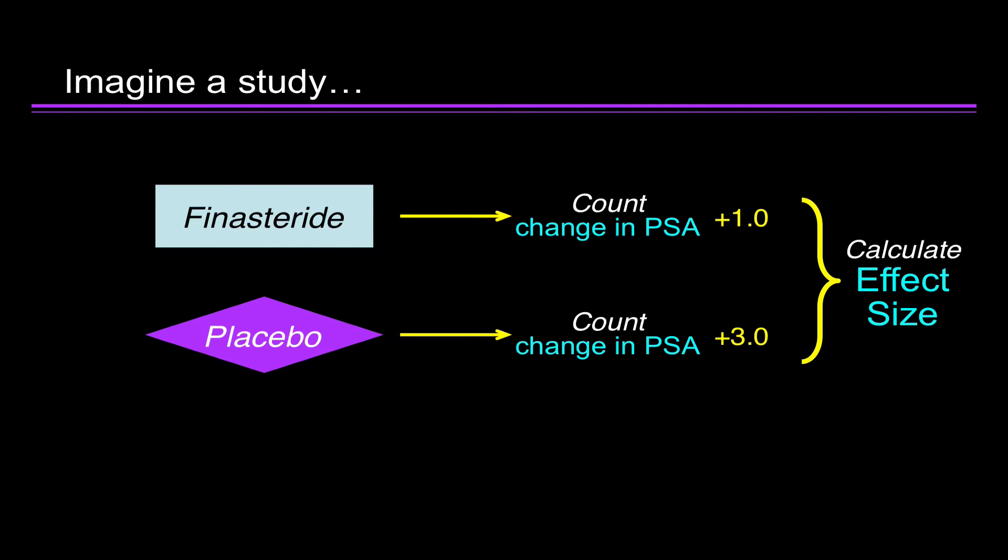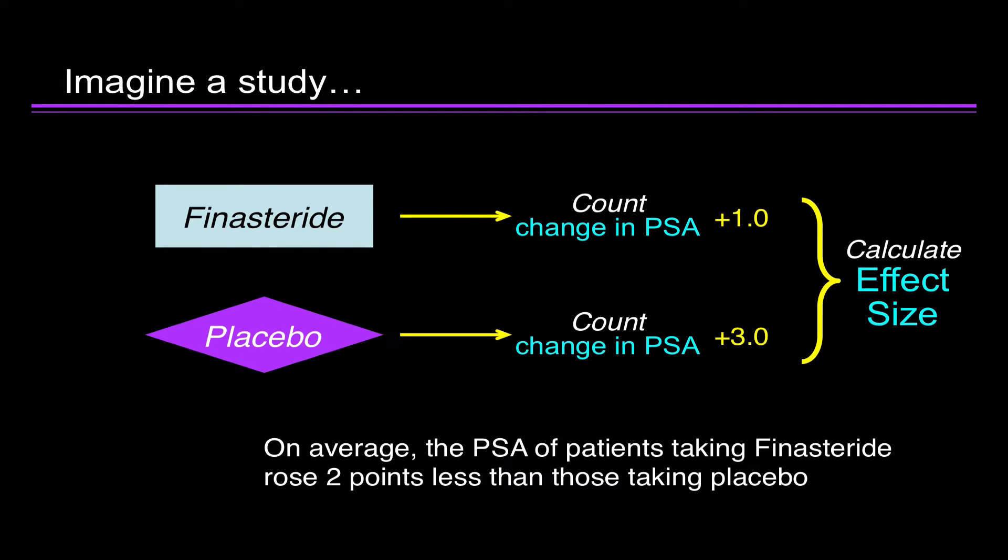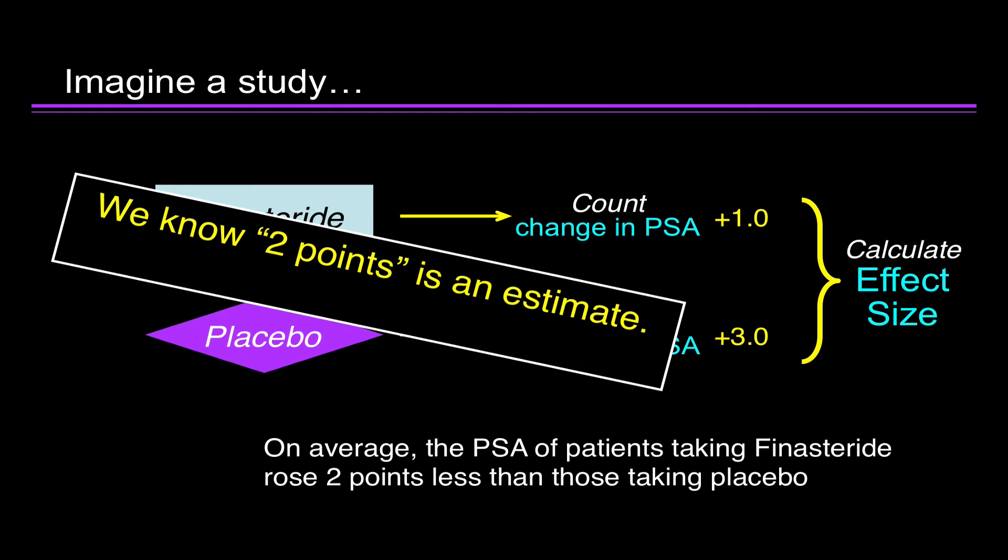We calculate the effect size and say, on average, the PSA of patients taking finasteride rose two points less than those taking placebo. Now, we know that two points is an estimate. The question is, how precise is the estimate?